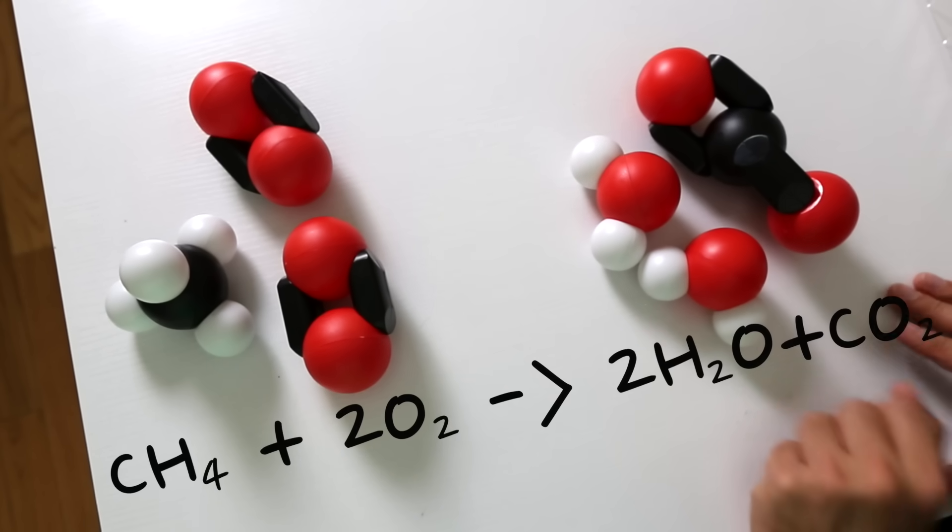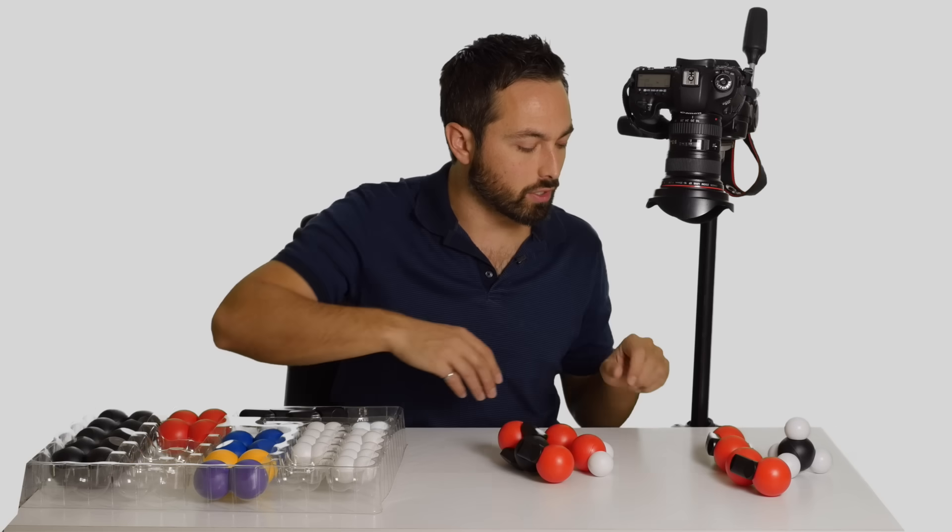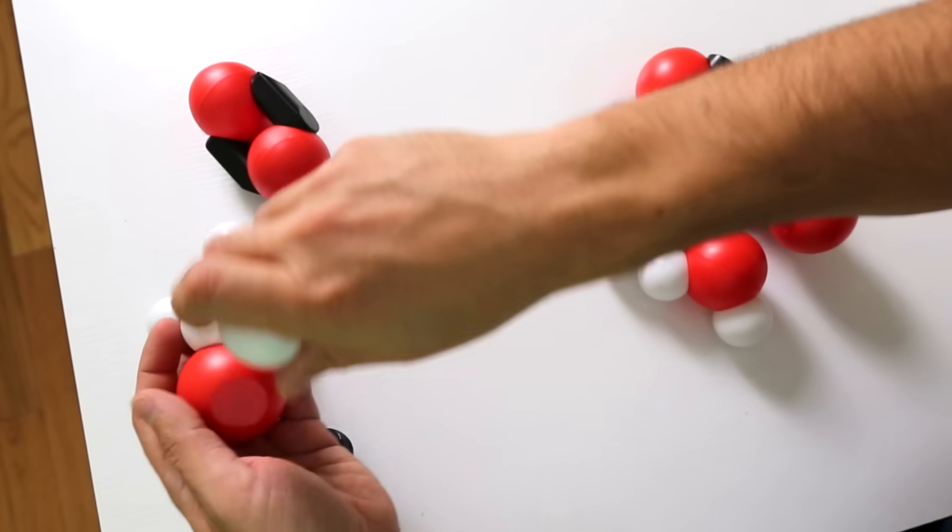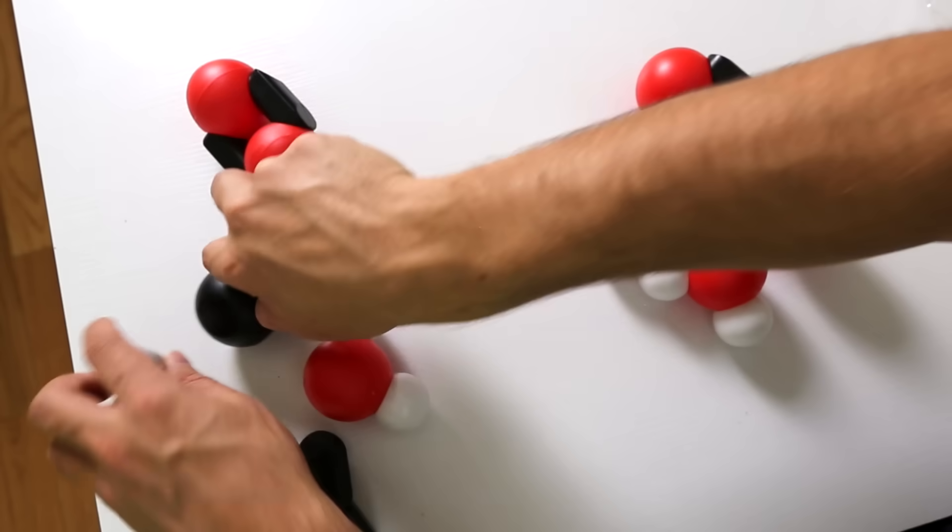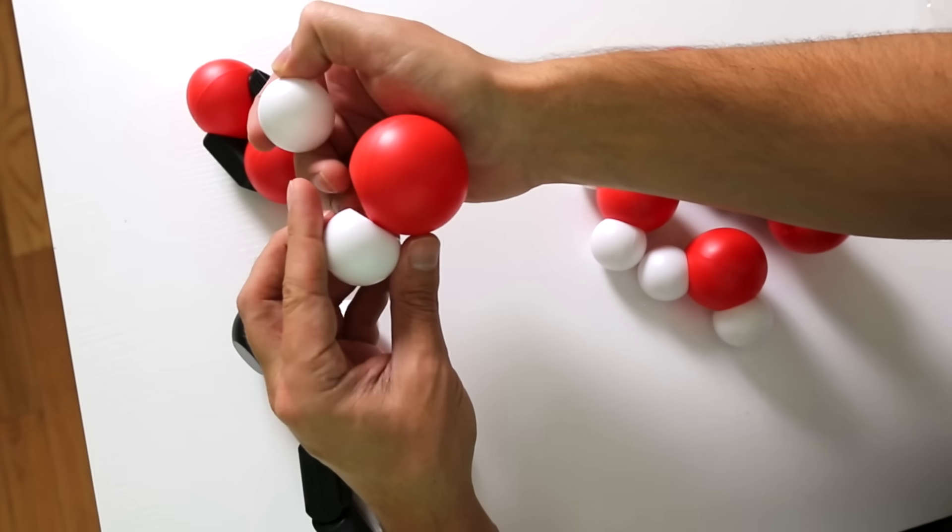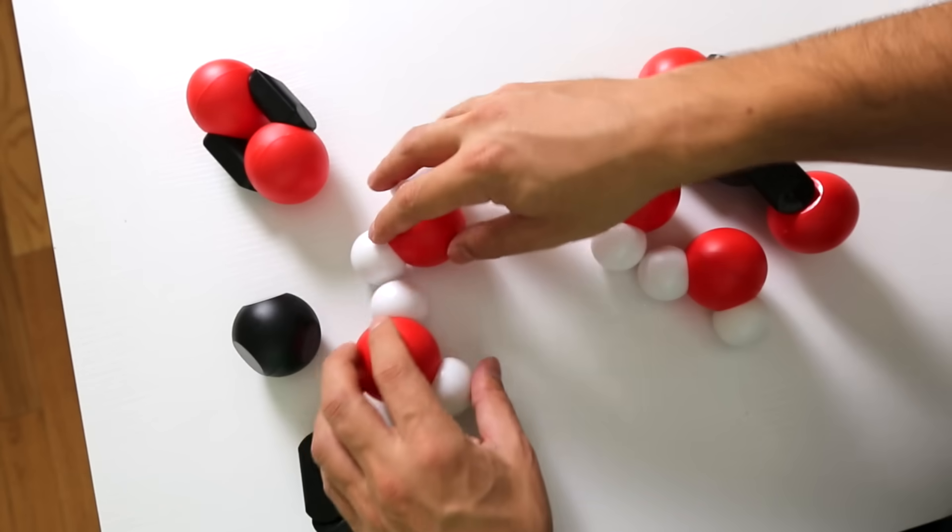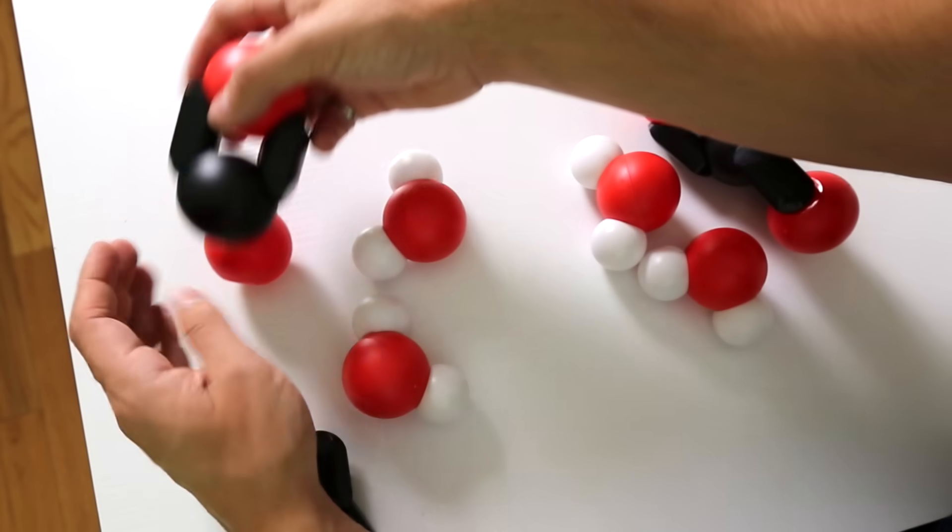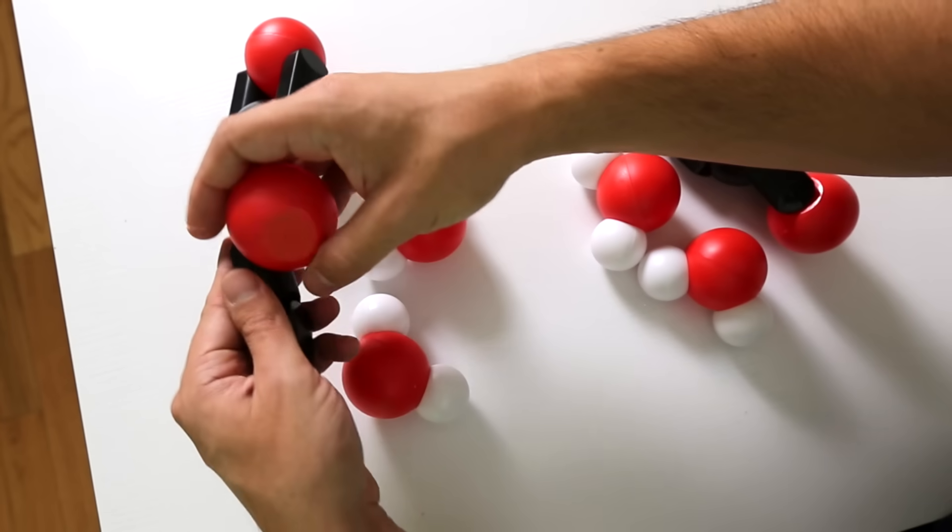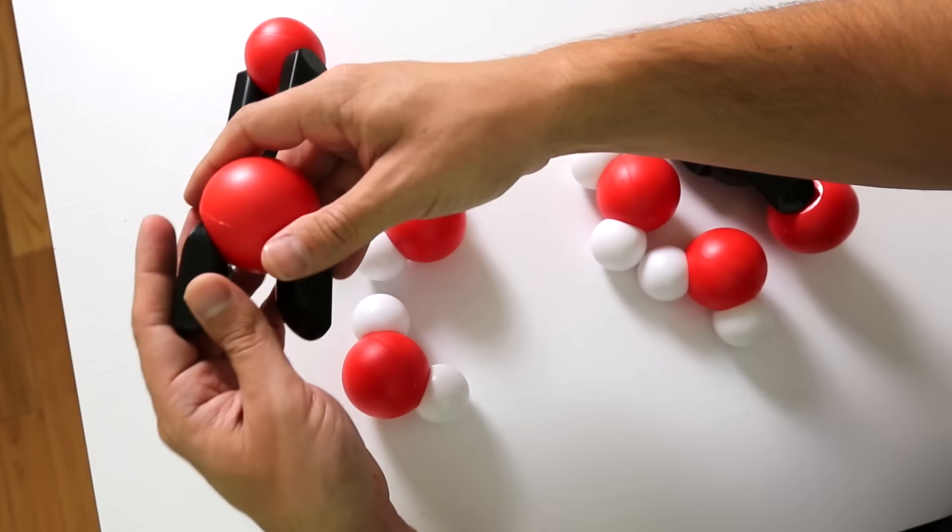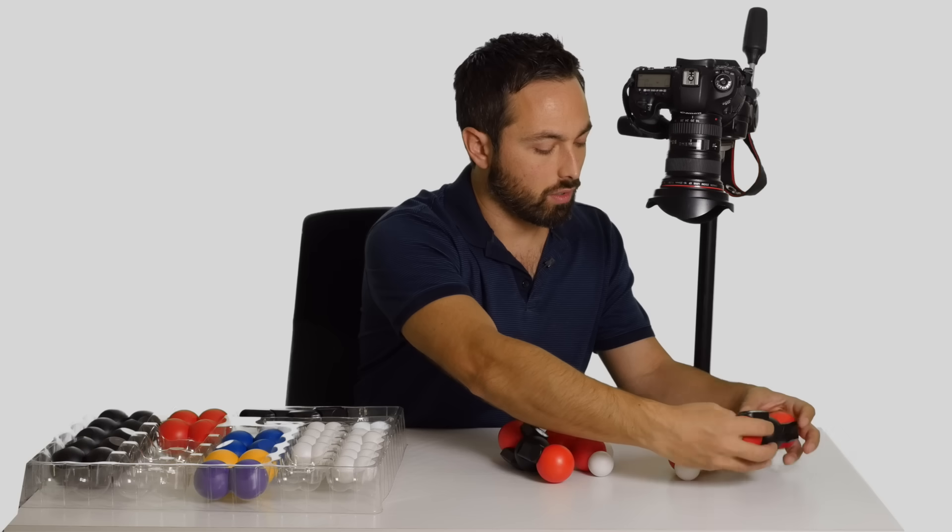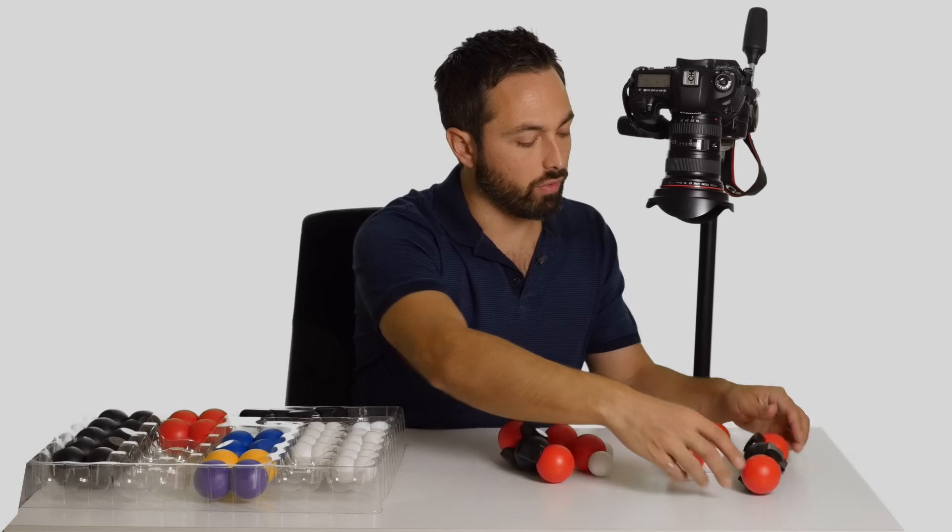So now this should work and we can actually do the reaction to find out. So I will form two water molecules like this. And I can form a carbon dioxide molecule like that and another double bonded carbon oxygen. There we go.